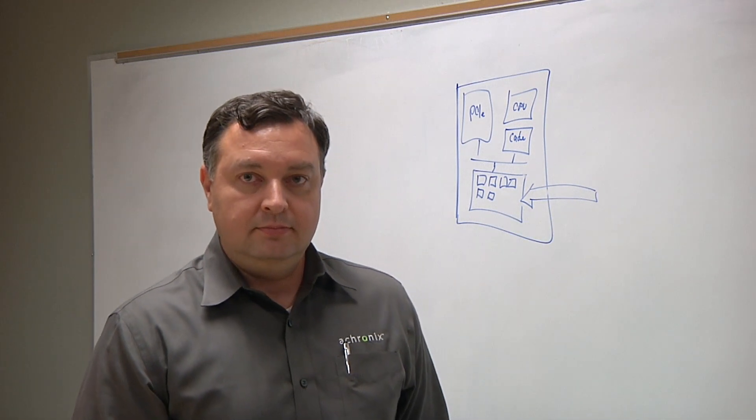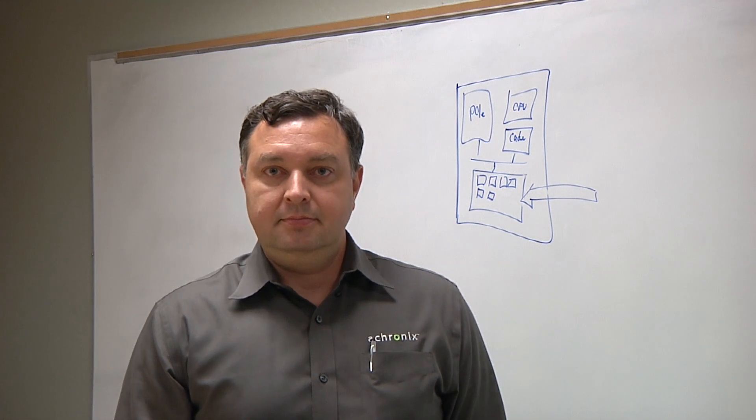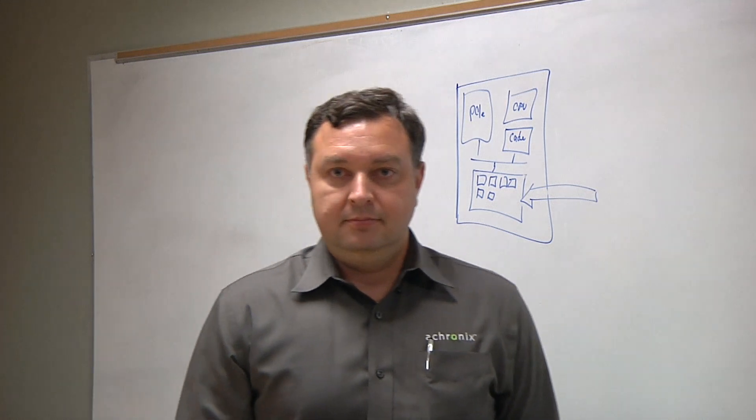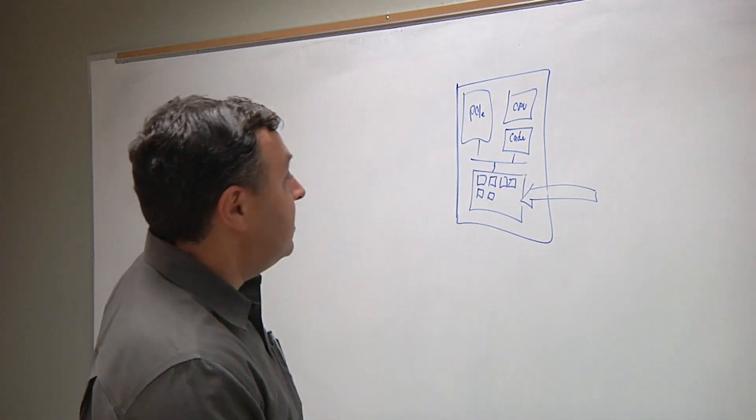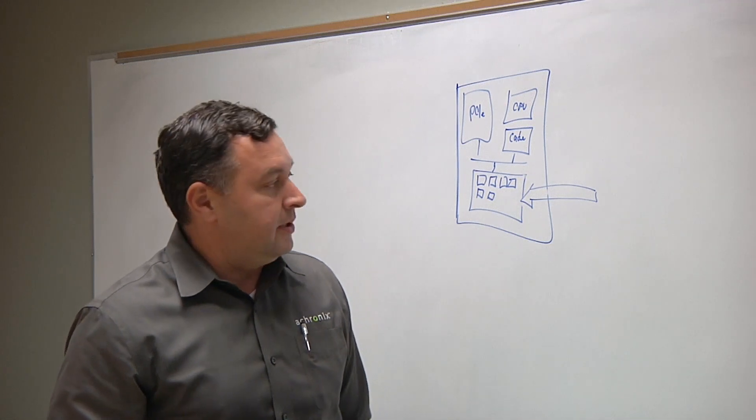So this chip comes back from the FAB. It has your embedded FPGA in it. What do you do with this? I mean, you have to program this now, right? The design flow for using the embedded FPGA is extremely similar to how you've designed the ASIC in the first place.